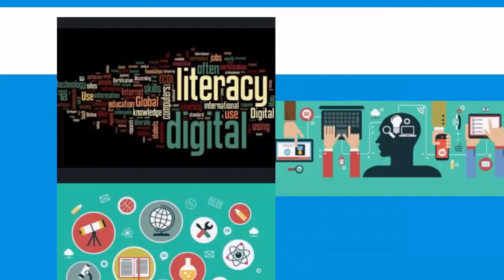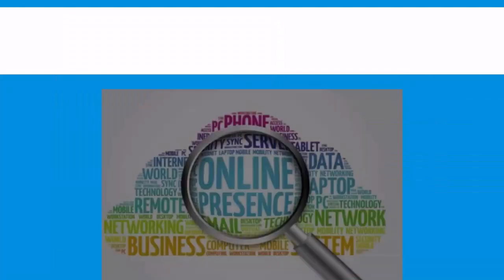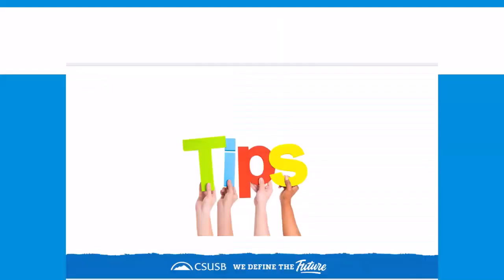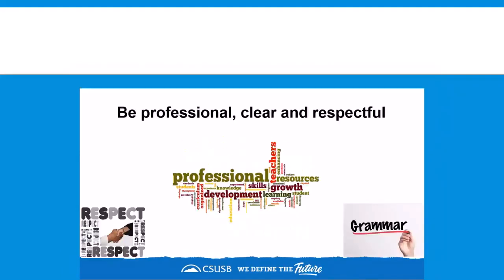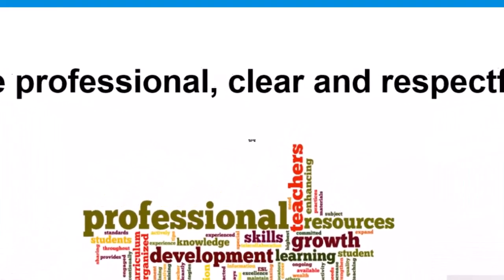Your first online college course can help you begin to develop your own online presence as a member of the CSUSB learning community. The following tips can help you communicate well online — read through each one to enhance your development as a positive digital citizen. Be professional, clear, and respectful: clear and effective writing translates to clear and effective communication. Consider the purpose of your communication and your audience.